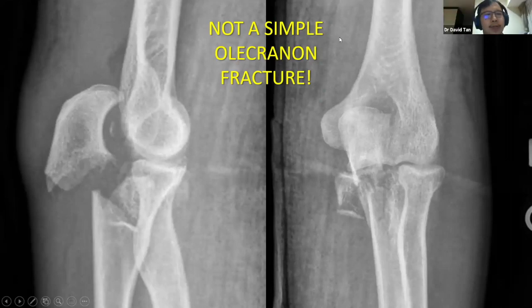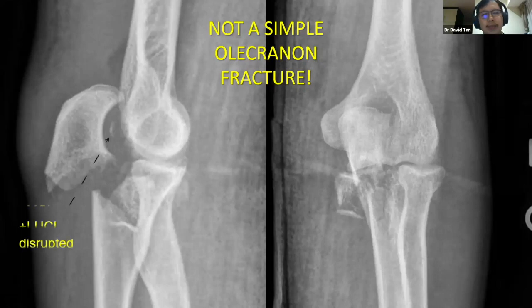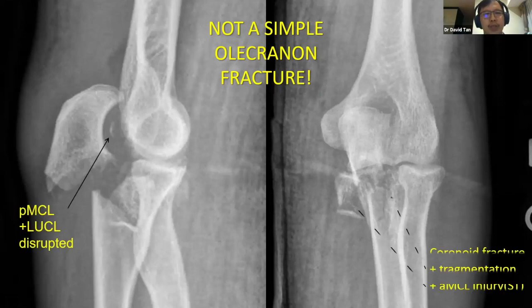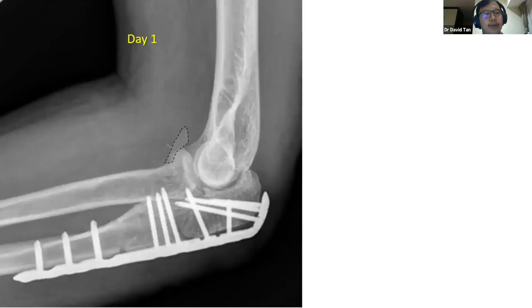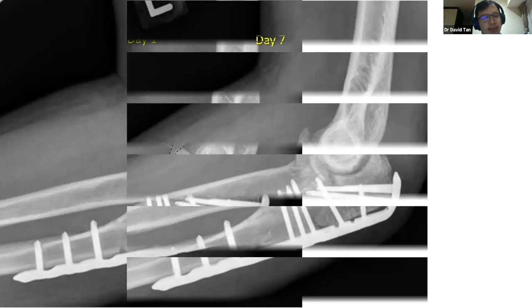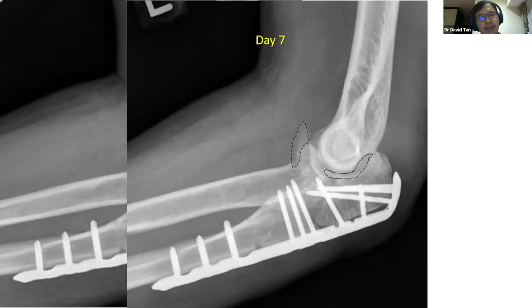This is not a simple olecranon fracture. The olecranon separated widely from the trochlea suggests that both the posterior band of the medial collateral ligament and the lateral collateral ligament have been disrupted. On the anterior joint, one can also appreciate the fragmentation of the coronoid together with a separate sublime tubercle fragment. The film while demonstrating a reduced humeroulnar joint shows that the coronoid fragment has not been restored — the drop sign suggesting ongoing instability.